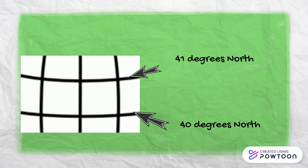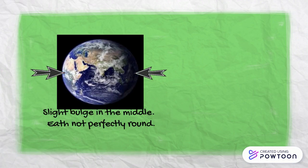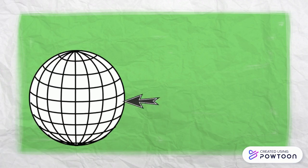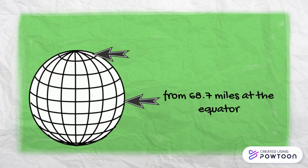Each degree of latitude is approximately 69 miles apart. This range varies due to the Earth's slight bulge from around 68.7 miles at the equator to 69.4 miles at the poles.